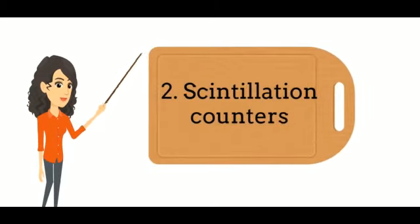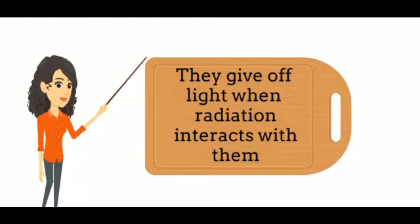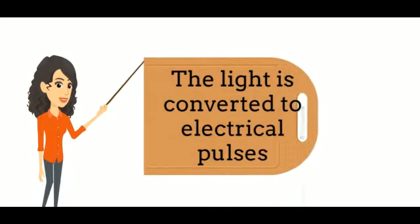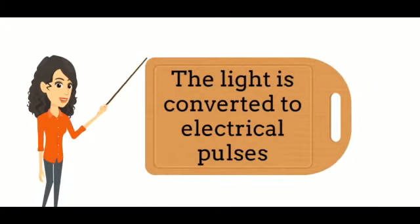The second type of detectors are the scintillation detectors. They are usually solids and give off light when radiation interacts with them. In this detector, the light is converted to electrical pulses and is processed by electronics and computers.